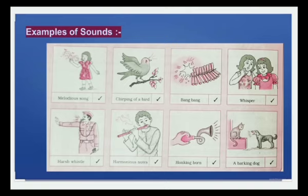Look at this picture carefully. You can see different types of sound which you hear daily in your surroundings. In the first picture, a girl is singing a melodious sound. In the second picture, a bird is chirping. In the third picture, a bang bang sound is produced after bursting firecrackers. In the fourth picture, girls are whispering. In the fifth picture, a traffic police officer is whistling harshly. In the sixth picture, a man is playing a flute, which produces harmonious sound.